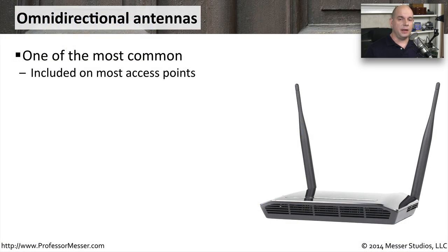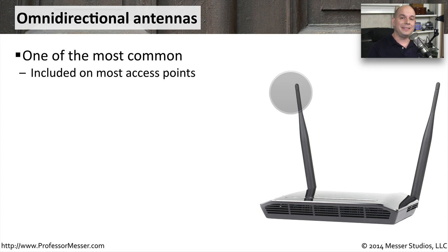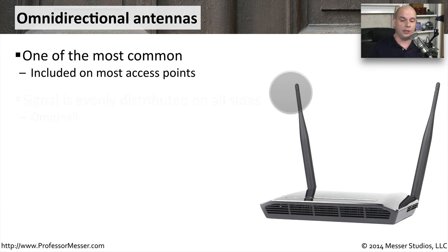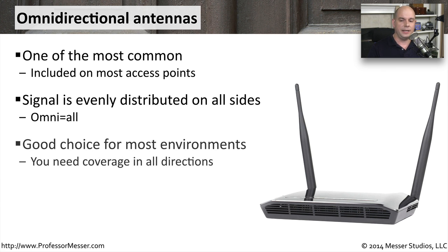A very common antenna type we see when we purchase wireless access points is an omnidirectional antenna. This is the antenna that simply points into the air, and you get exactly the same type of coverage wherever you happen to be around that particular access point. The signal is evenly distributed on all sides — that's why we call it an omnidirectional antenna — because no matter where you happen to be, you receive the same signal strength from that antenna.